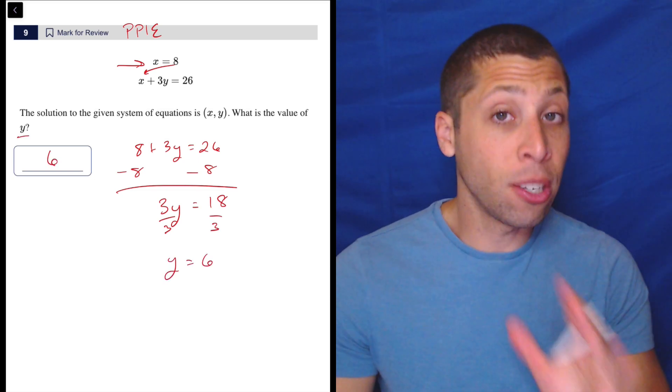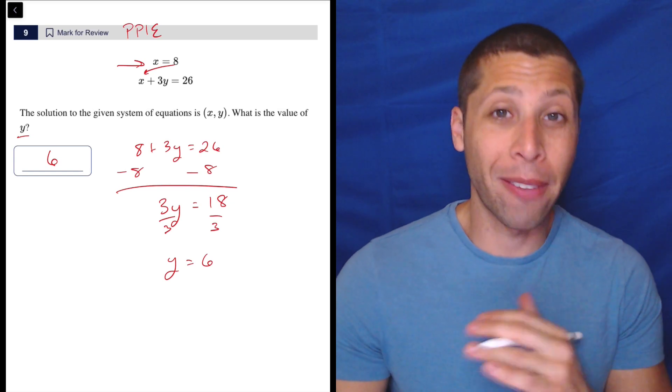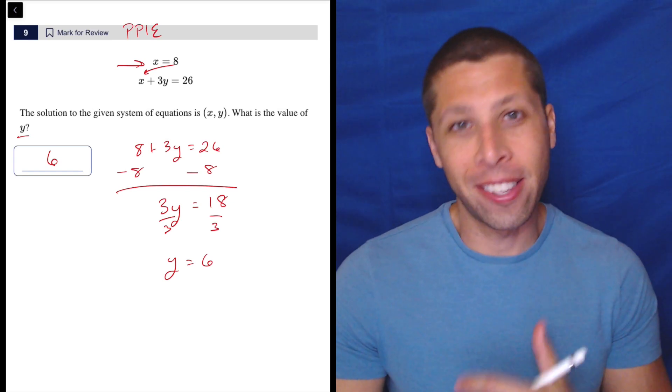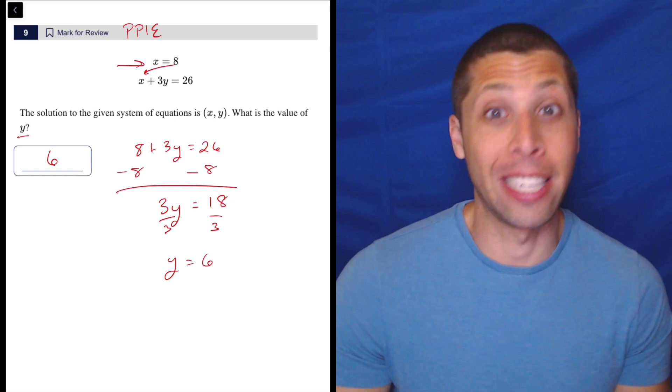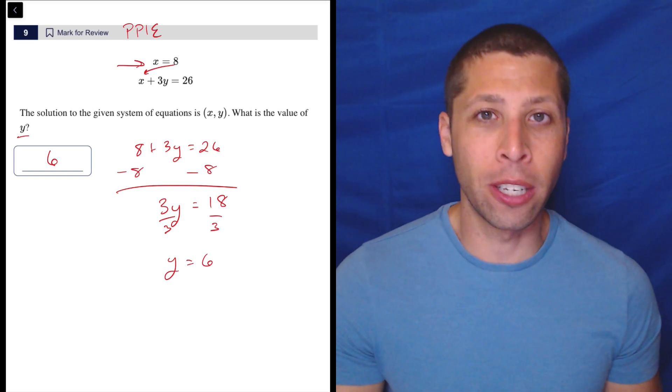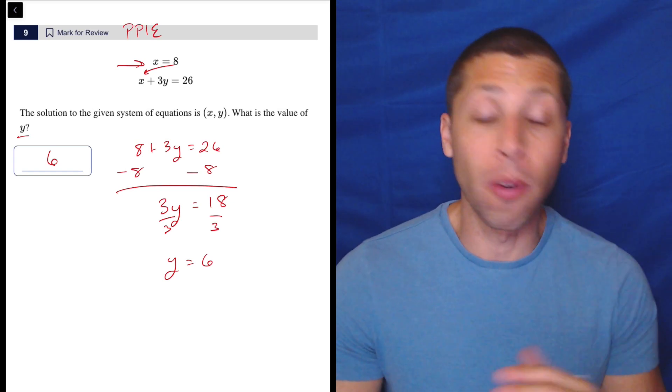Done. Because what do they want? They wanted the Y. And that is one thing we have to be careful of when we have any sort of system of equations is they could ask for the X, they could ask for the Y. I kind of knew they'd ask for the Y here just because they basically gave me the X. But it's good to check before you move on to the next question.